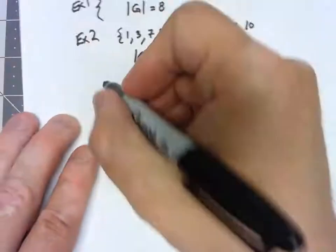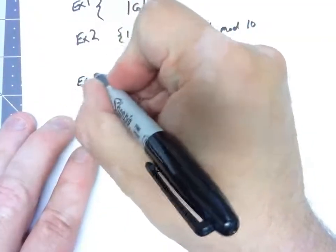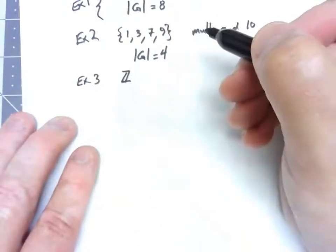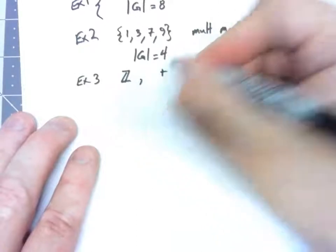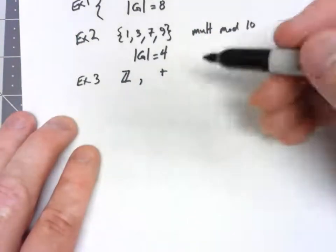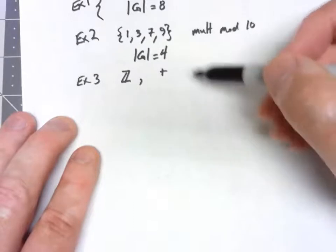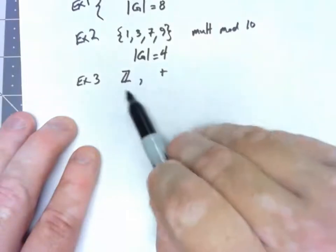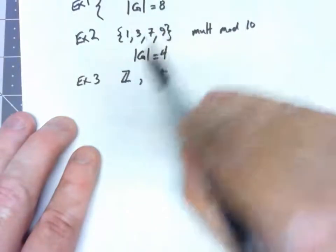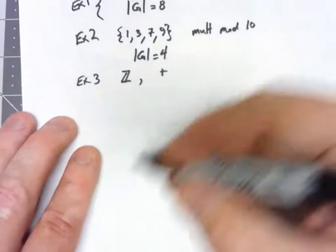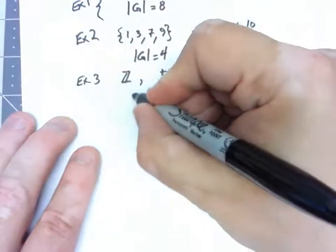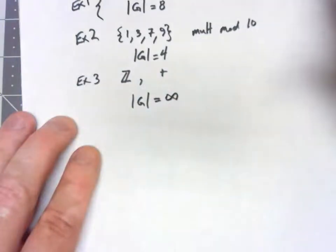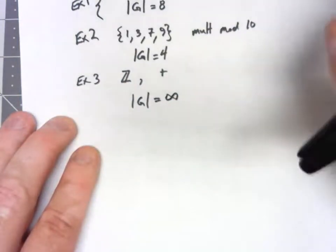One more. If we look at the integers under addition, and you should probably go through and verify that that contains all three properties of a group, in this case, there's an infinite number of elements in that group. There's an infinite number of integers. So the order of that group is infinity. So that's the order of a group.